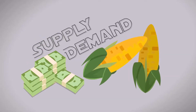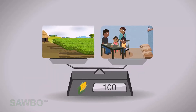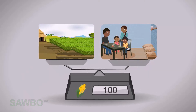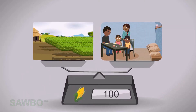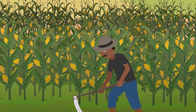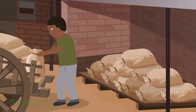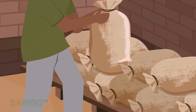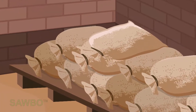This video shows why the prices change for agricultural products. Many factors influence the price of an agricultural commodity. A market can be thought of as a scale. On the left side of the scale, we see farmers growing maize and storing it in their houses after harvest. This represents the production or supply side.